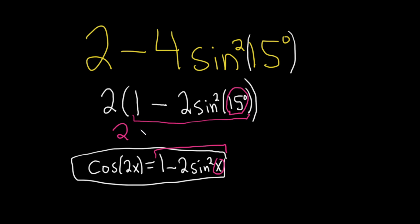So then it's just going to be cosine of 2x, cosine of 2 times 15, so cosine of 30 degrees. Really nice.